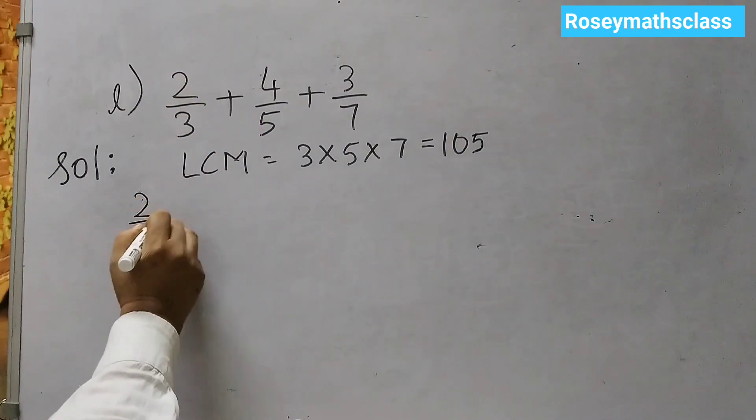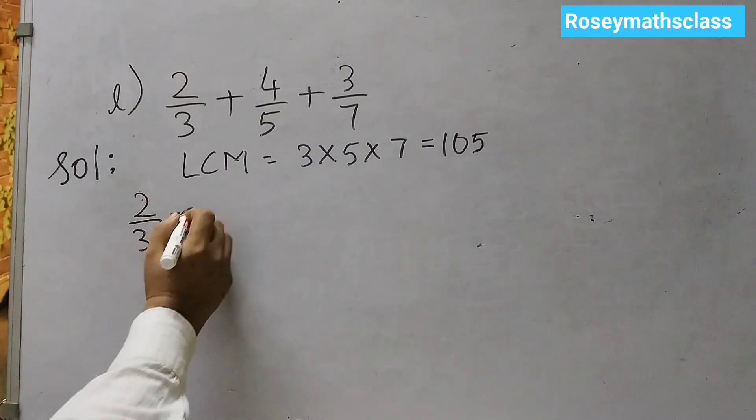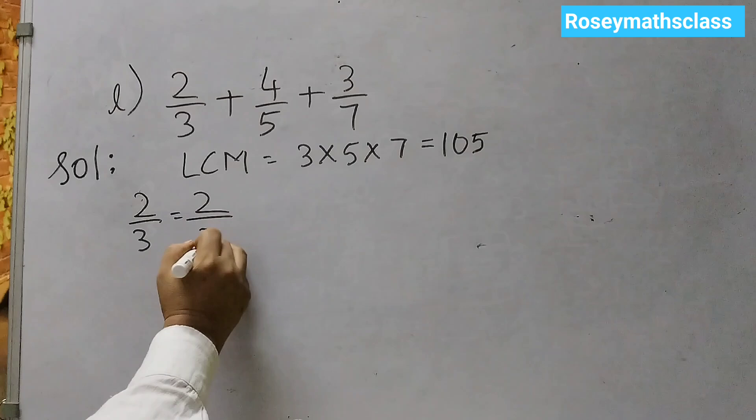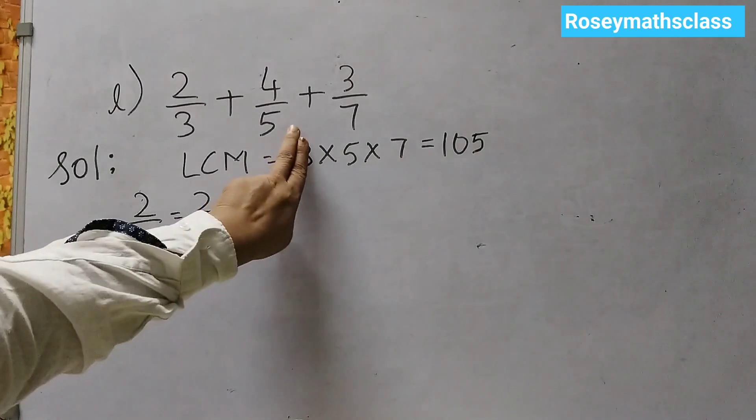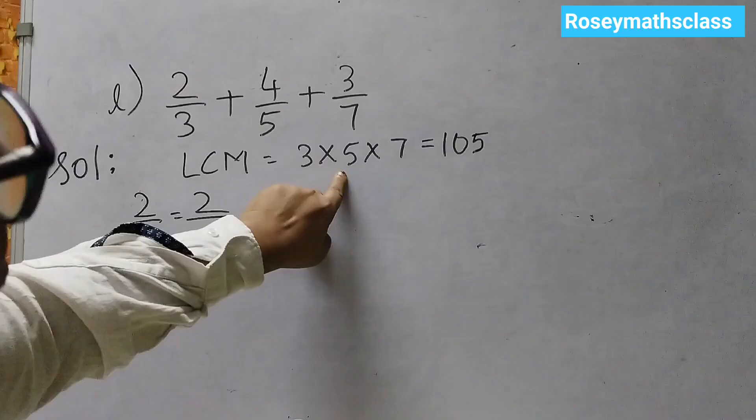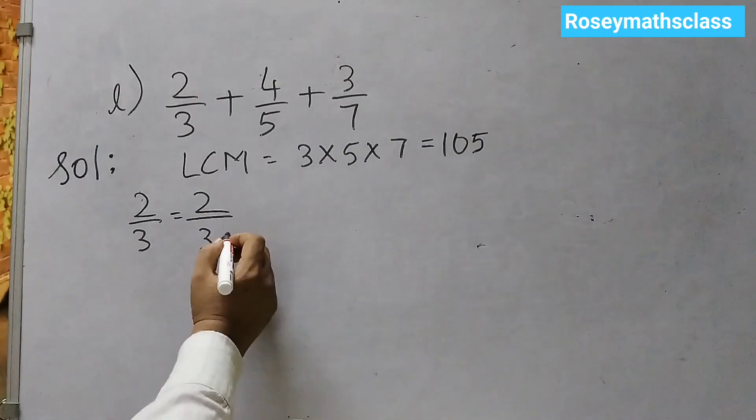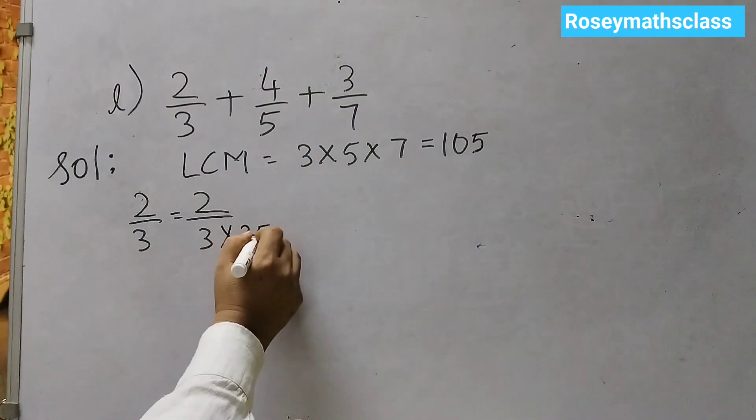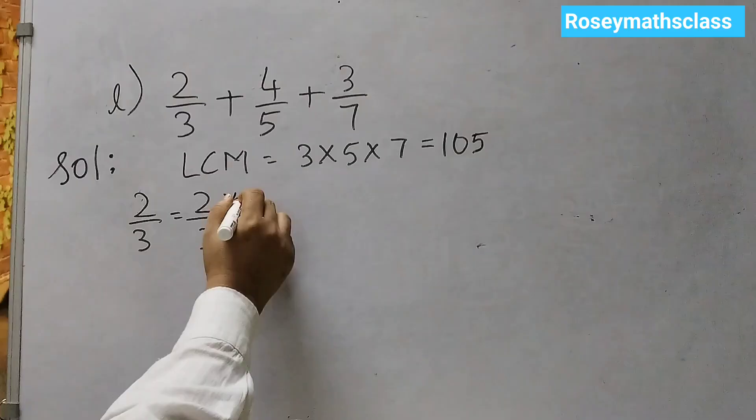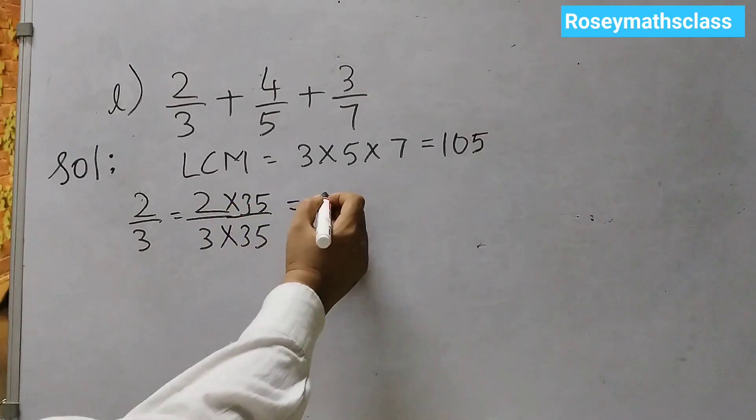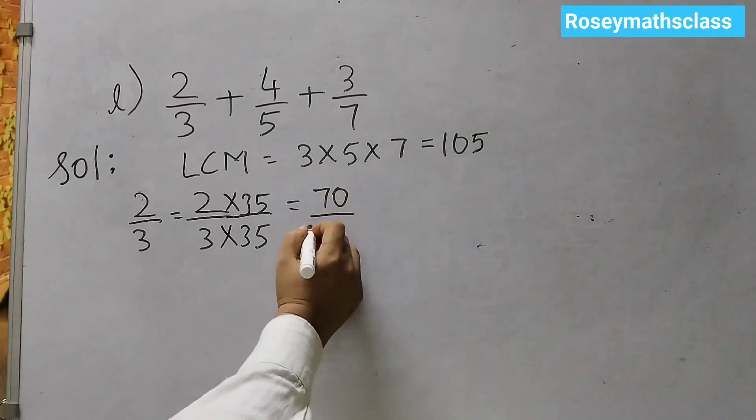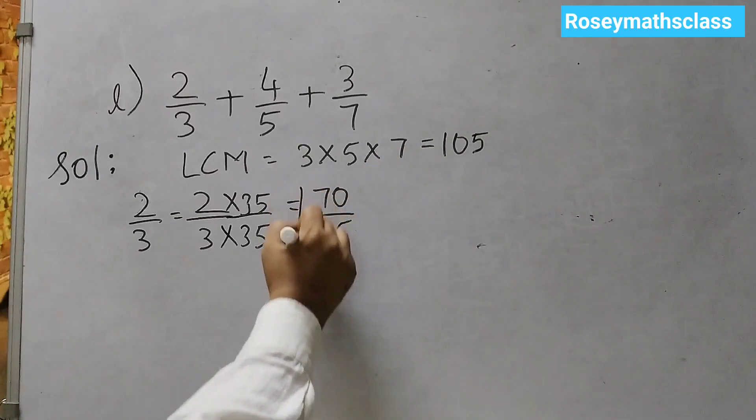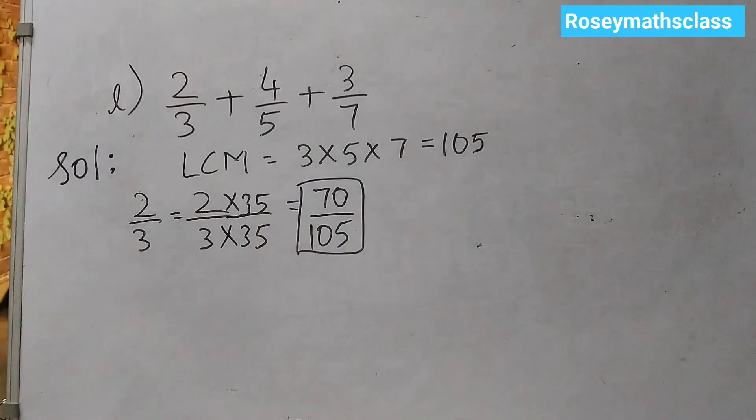Now, we will convert these to equivalent fractions. 2 by 3. Now, what number do I multiply? The same rule. Hide 3. 5 into 7 is 35. So, 35. And here also you will multiply by 35. 2 into 35 is 70. 3 into 35 is obviously 105. So, this is first equivalent fraction that we have got.